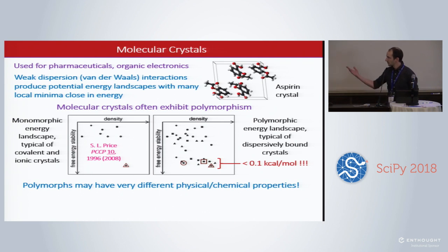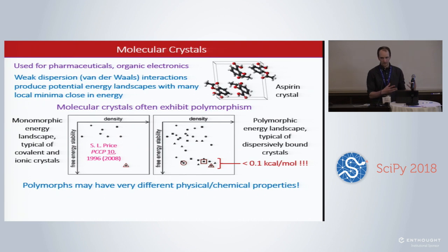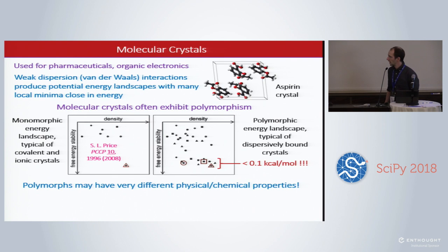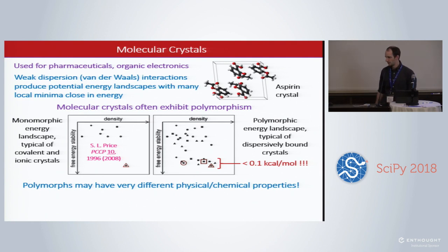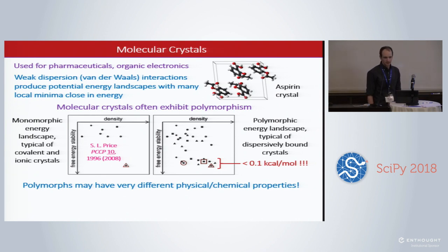The ability of a molecular crystal to solidify in various states is called polymorphism, and that definitely increases the challenge with molecular crystal structure prediction. This in combination with long computation times necessitates an enhanced searching algorithm.